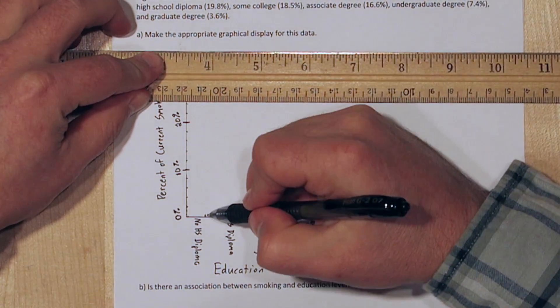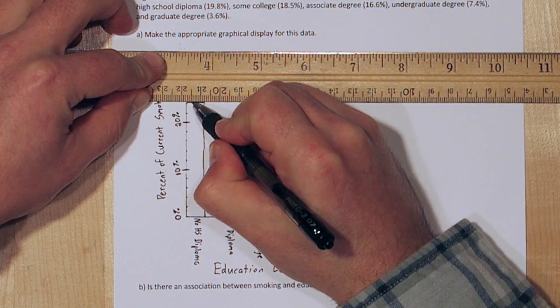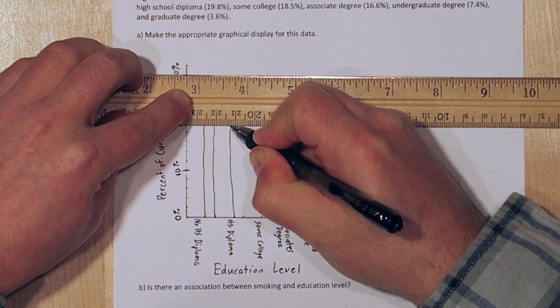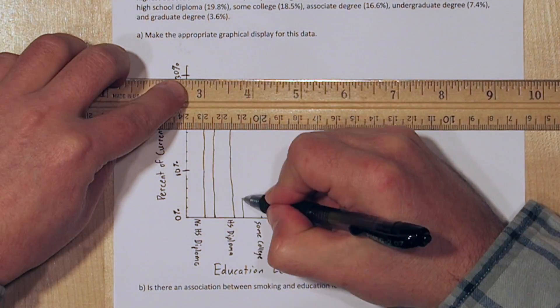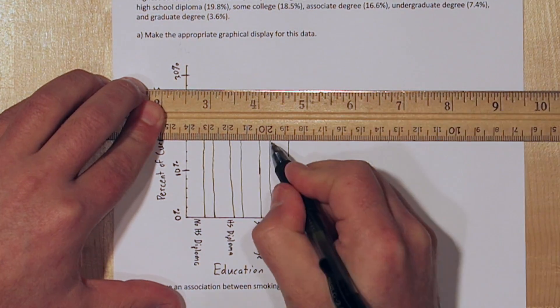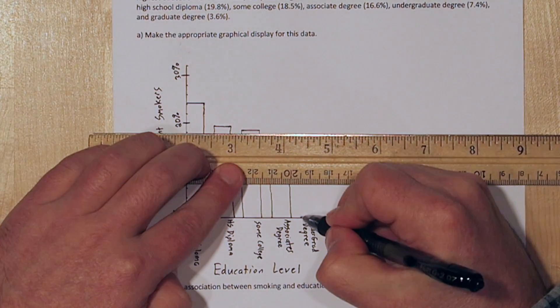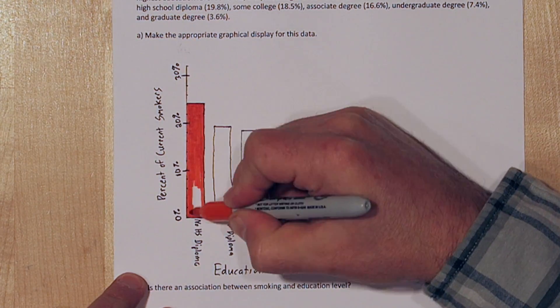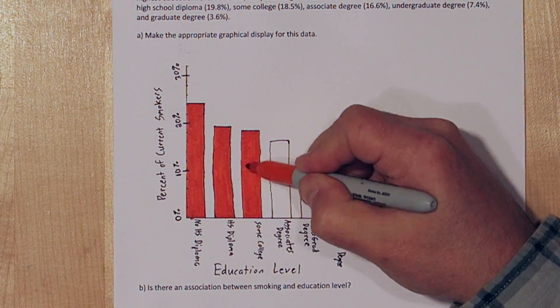So for no high school diploma the percentage was 24.2%, for high school diploma 19.8%, some college 18.5%, associate's degree 16.6%, undergraduate degree 7.4%, and graduate degree 3.6%. And we'll color it in to make it stand out a little better.